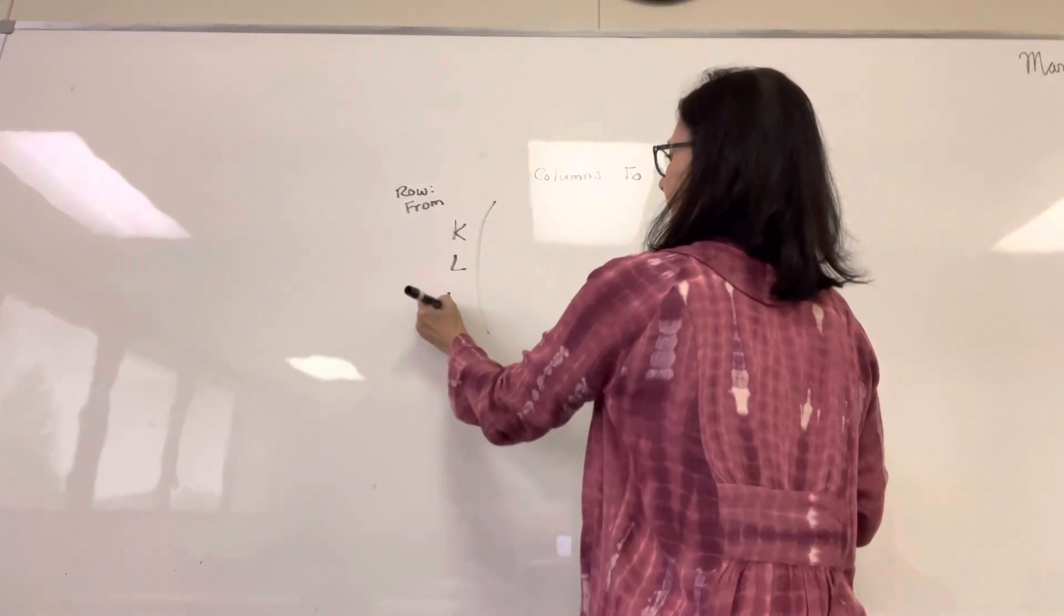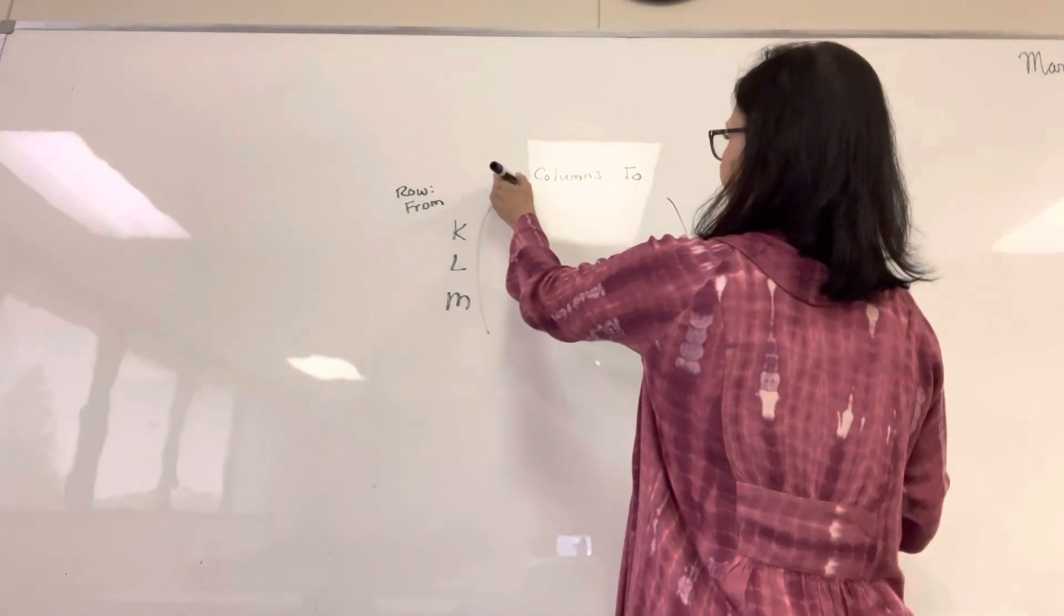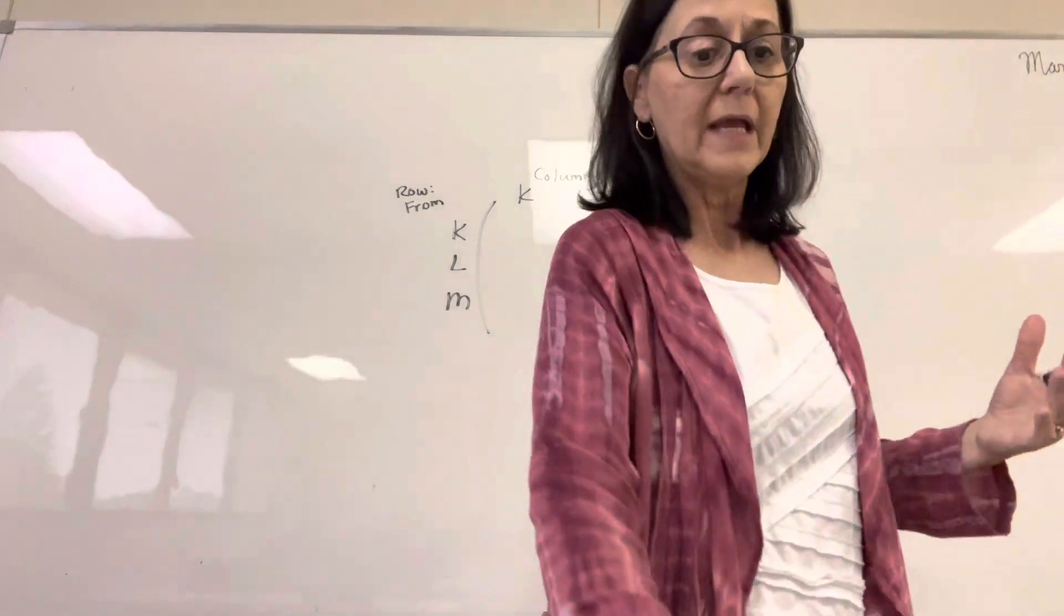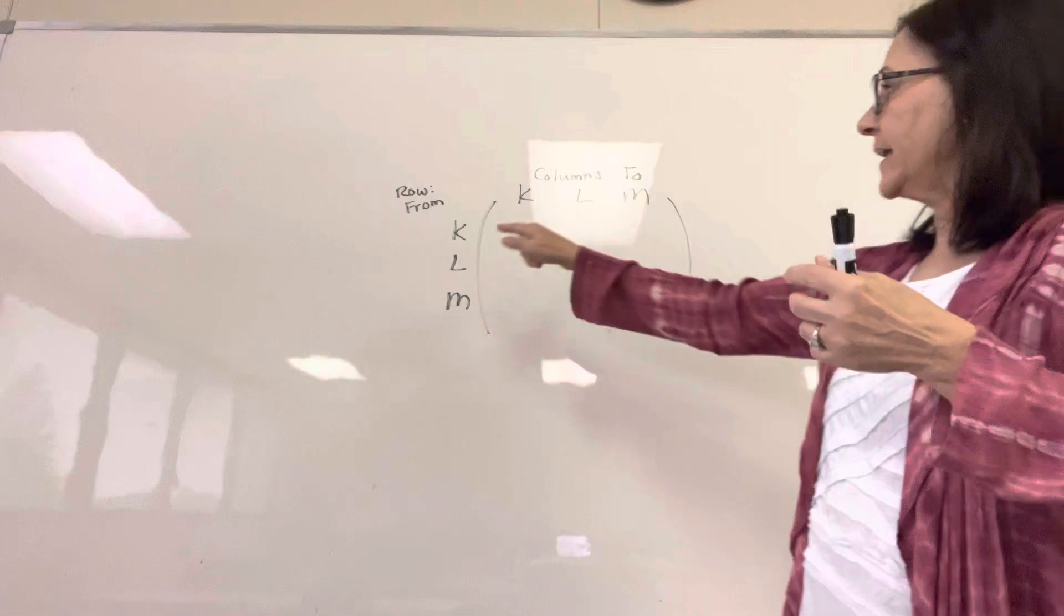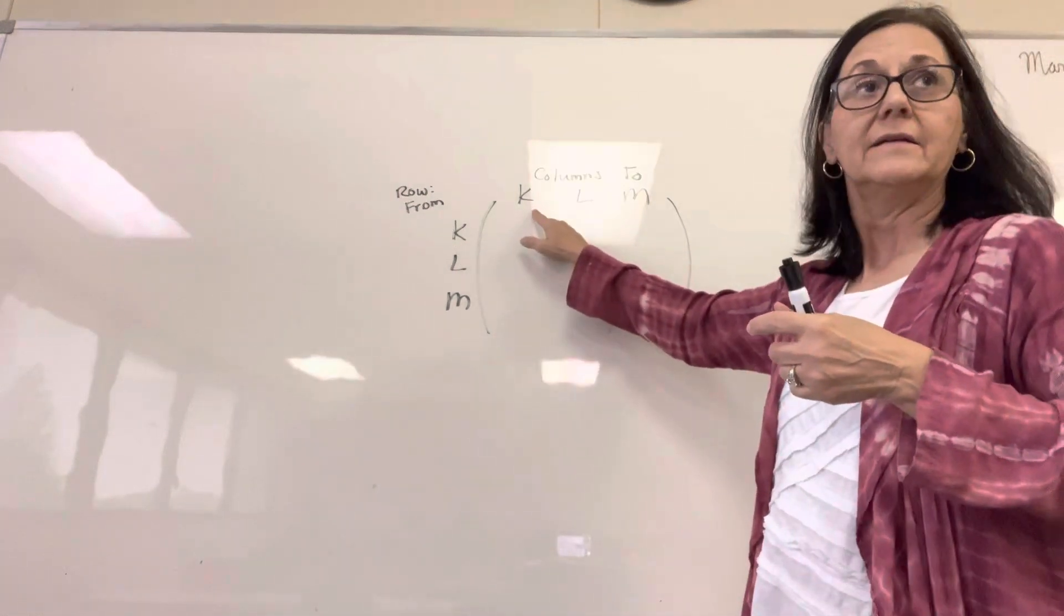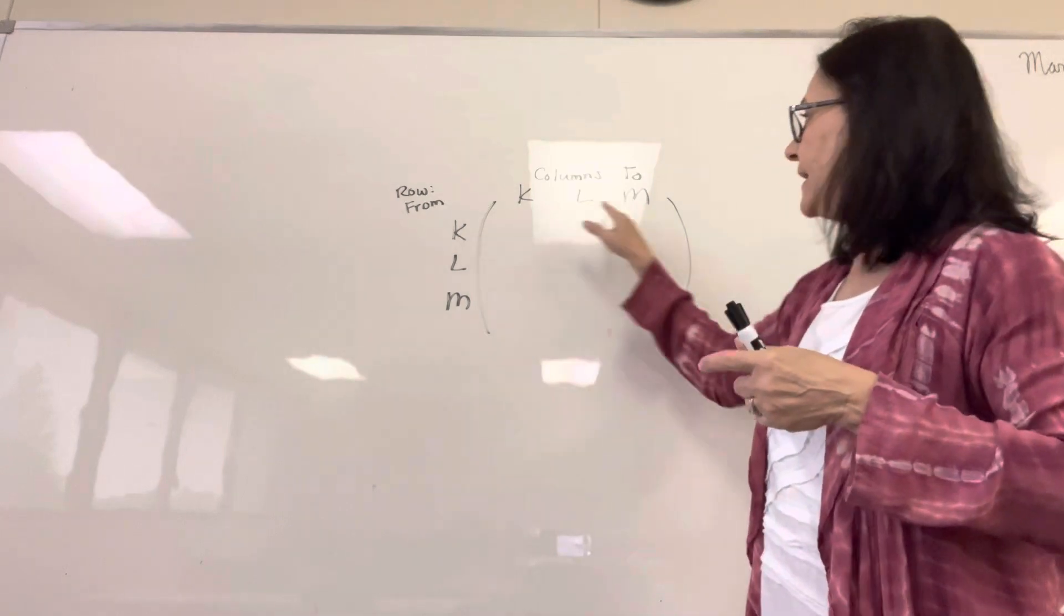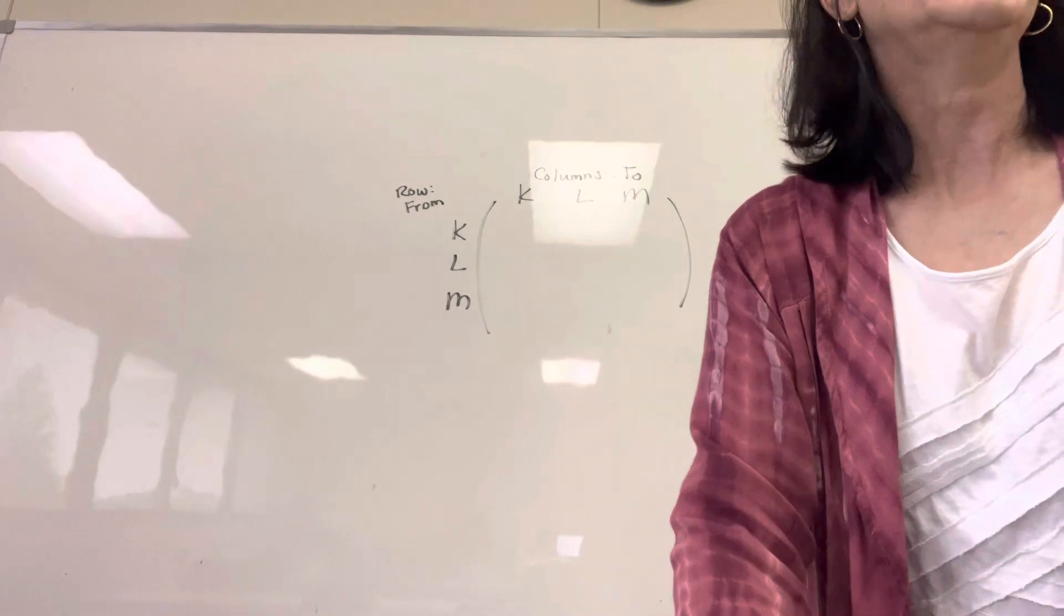So I'm going to write that in my rows. I'm going to say from K, and then I'm also going to K, L, and M. And we're going to decide how many arrows go from K to K, from K to L, and from K to M. And that's going to be our numbers in the matrix.